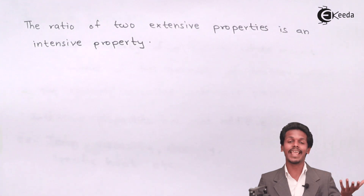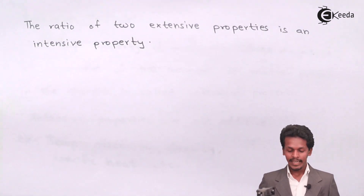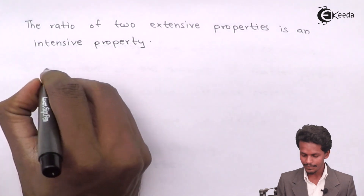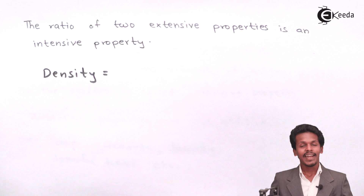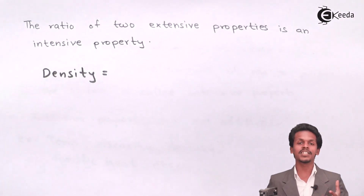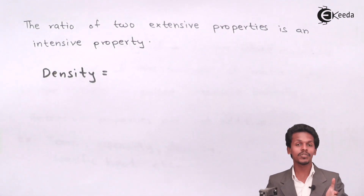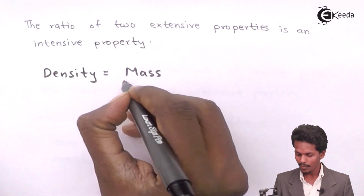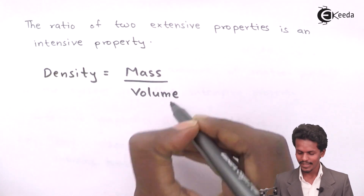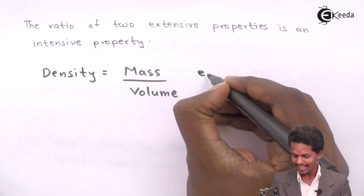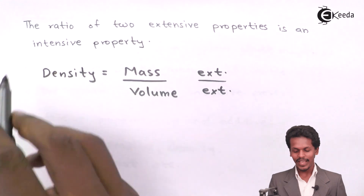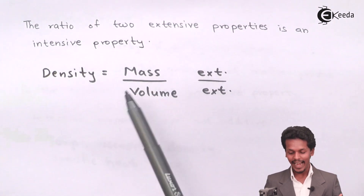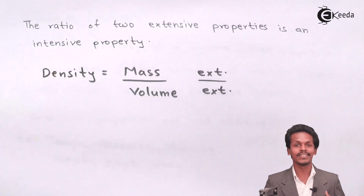An important point: the ratio of two extensive properties is itself an intensive property. For example, density is said to be an intensive property — it doesn't depend on the amount of matter. But density is nothing but the ratio of mass and volume, and both mass and volume are extensive properties. So when we take the ratio of two extensive properties, the resulting property is an intensive property.